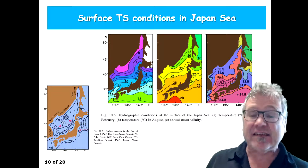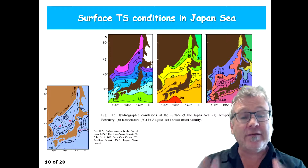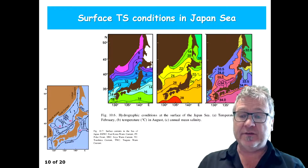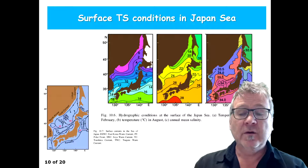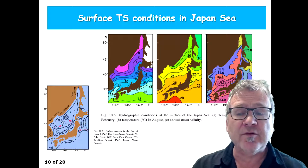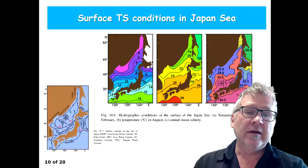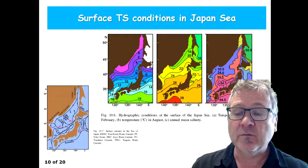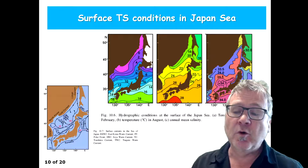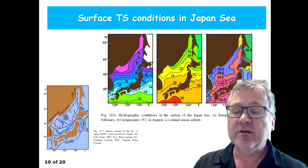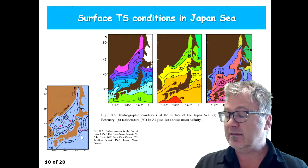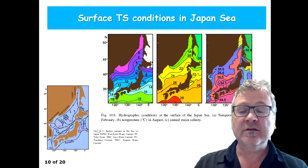Now we are in the Japan Sea. On the left is a little map of the currents that you have in this region. We already talked about the western boundary currents that meet in the adjacent open ocean, where the Oyashio comes from the north, the Kuroshio, the warm water current, comes from the south, and they create the polar front. It's shown here on the left side.